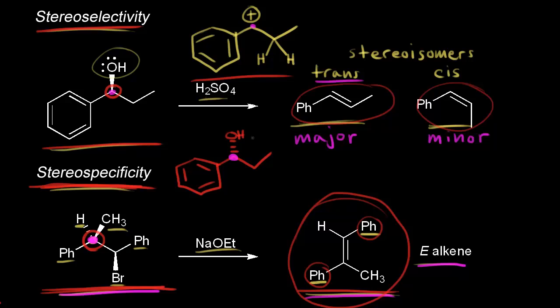We do not know what the stereochemistry is at this carbon — is the OH on a dash, or is the OH on a wedge? So this is not a stereospecific reaction. Instead, think about a stereoselective reaction as being selective for, in this case, the trans isomer — the more stable isomer.